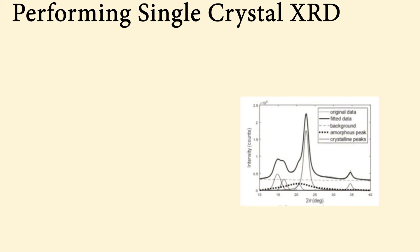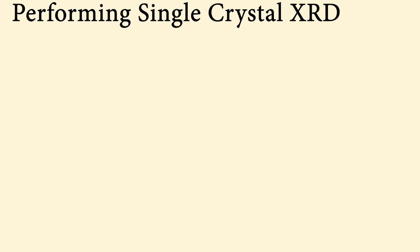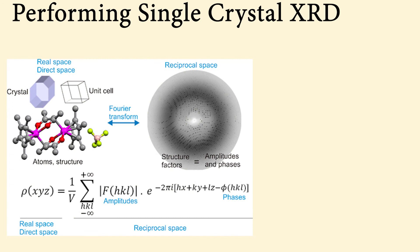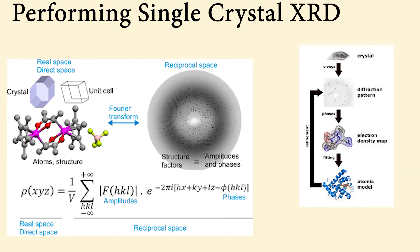Once a test is complete, corrections must be applied to the data to account for instrumental factors, polarization effects, x-ray absorption effects, and potentially crystal decomposition. Each set of planes can be combined with the structure factors of the specific crystal system to give us the electron density and therefore the crystal structure.